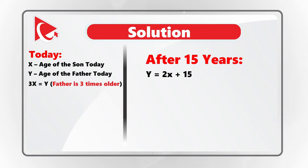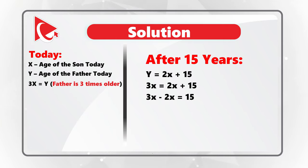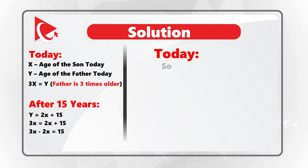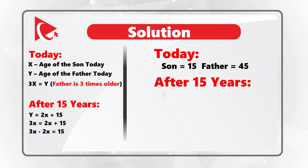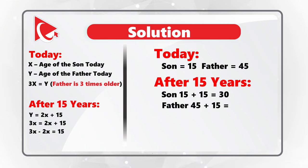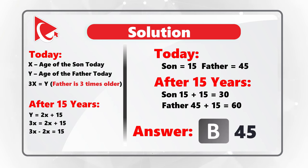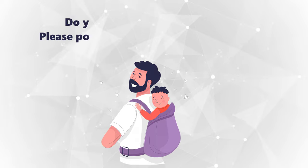Because y is the same in both cases, we can build the expression 3x equals 2x plus 15. Simplifying: 3x minus 2x equals 15, so x equals 15 and y equals 45. Today's age of the son is 15 years old, which means after 15 years the son will be 30 and the father will be 60. Hopefully you've nailed this question and now know how to answer similar age problems on the test.